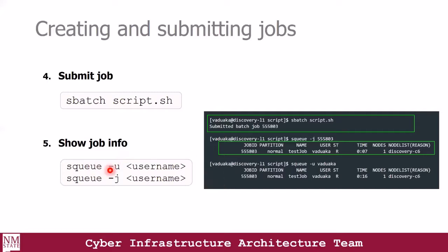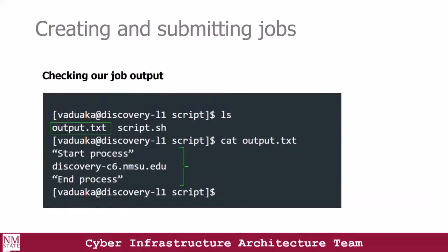For example, if I use the sq command with a dash username, it gives me a list of all jobs running under my username. If I use the sq command with the job ID, it gives me details for that specific job. Once our job runs successfully, we check the output file. Listing the files in the current working directory shows the output.txt file. Viewing its contents, we can see 'start process', the hostname where our job ran, and the final echo statement.